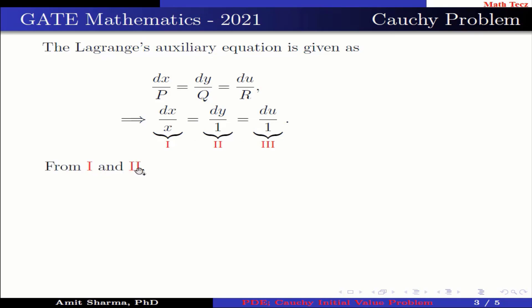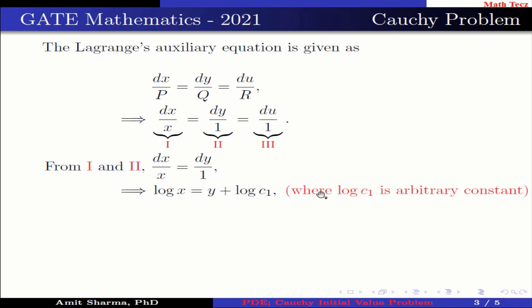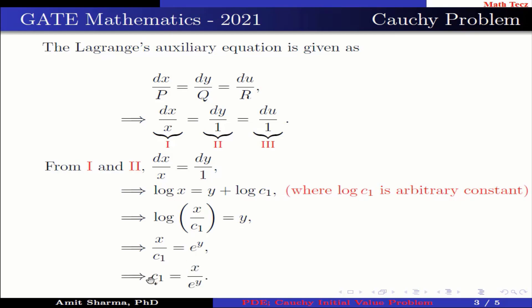From equations 1 and 2, we have dx/x equals dy/1. Integrating both sides, we get log x equals y plus log c1, where log c1 is an arbitrary constant. This further implies log(x/c1) equals y, which implies x/c1 equals e to the power y, and therefore c1 equals x divided by e to the power y.